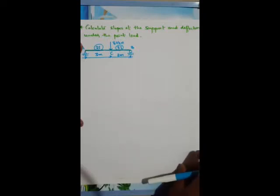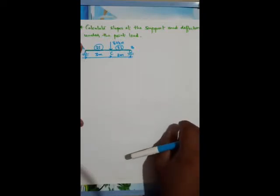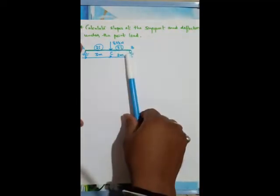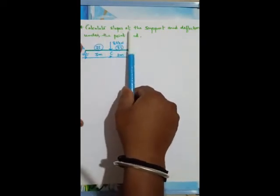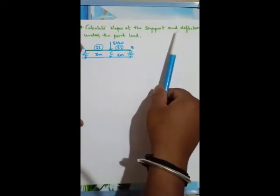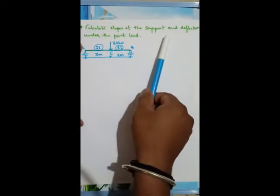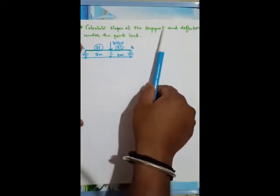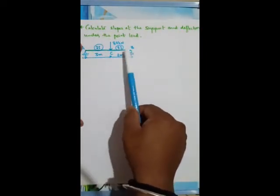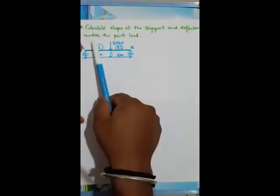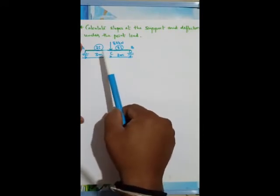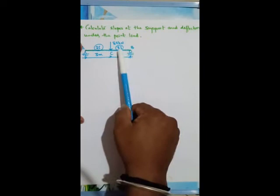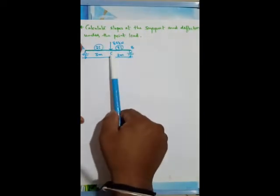Hello everyone. Let us start solving problems on simply supported beam by conjugate beam method. This is the first problem on simply supported beam. The statement is: calculate slopes at the supports and deflection under the point load — that is, slope at support A (theta A), slope at support B (theta B), and deflection under the point load at point C (delta C).